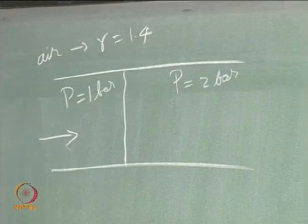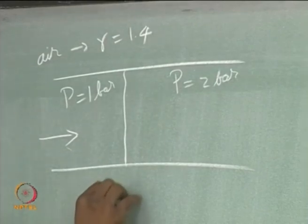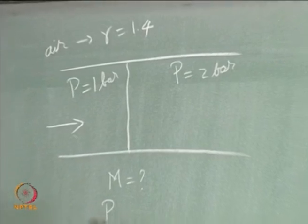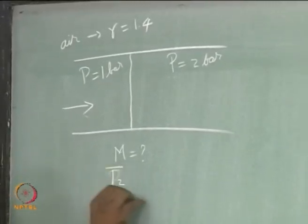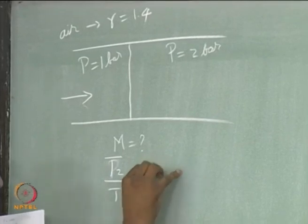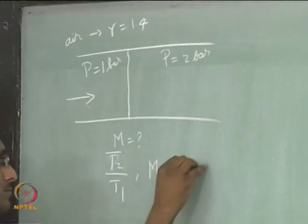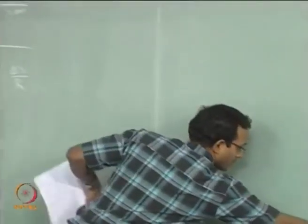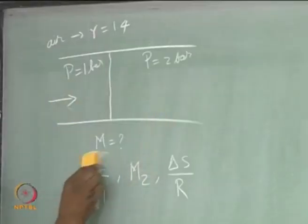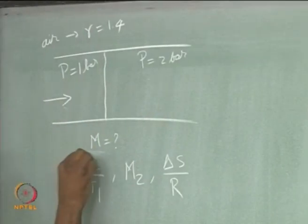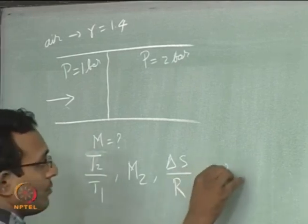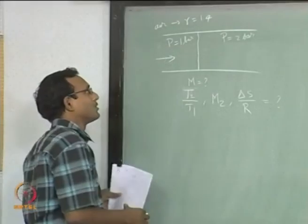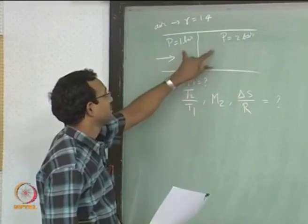When I say it is air, gamma equals 1.4. My goal is to find the shock Mach number. We know the pressure ratio. I want T2/T1, I want the post-shock Mach number M2, and I want ΔS/R. These are all the things I want to find. It is a straightforward question — we know something about the shock, specifically that the pressure jump across the shock is given.